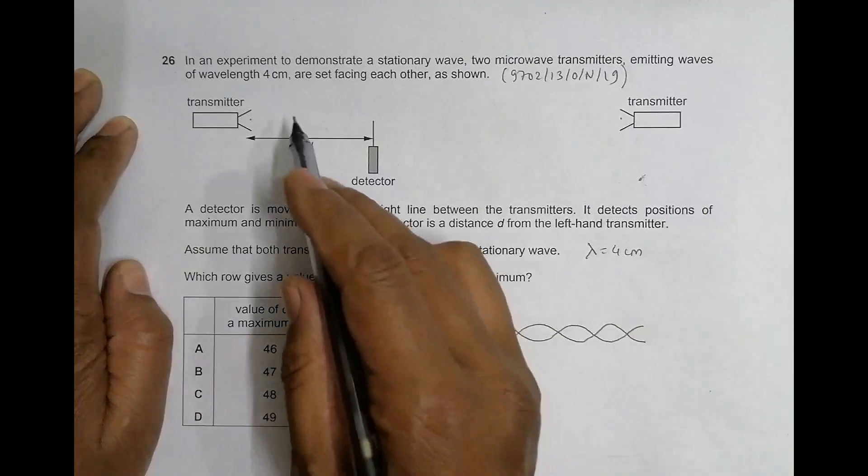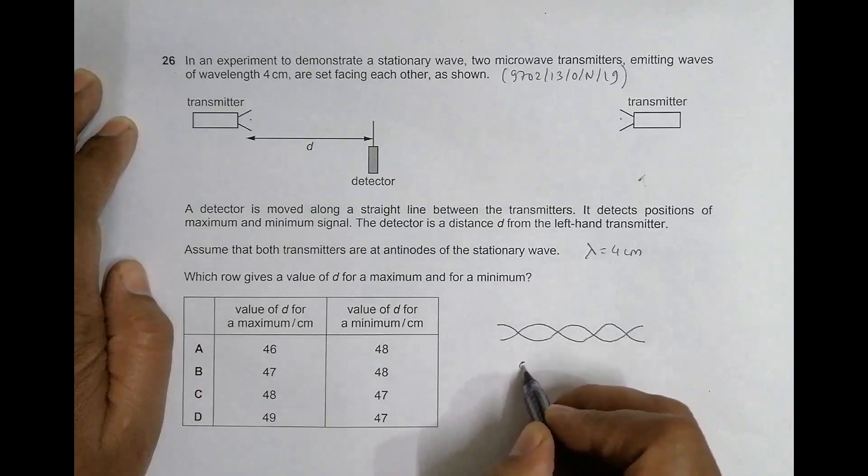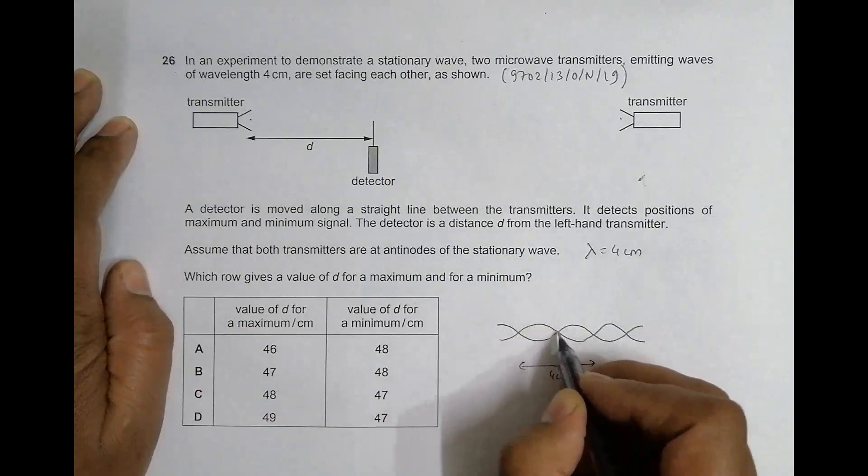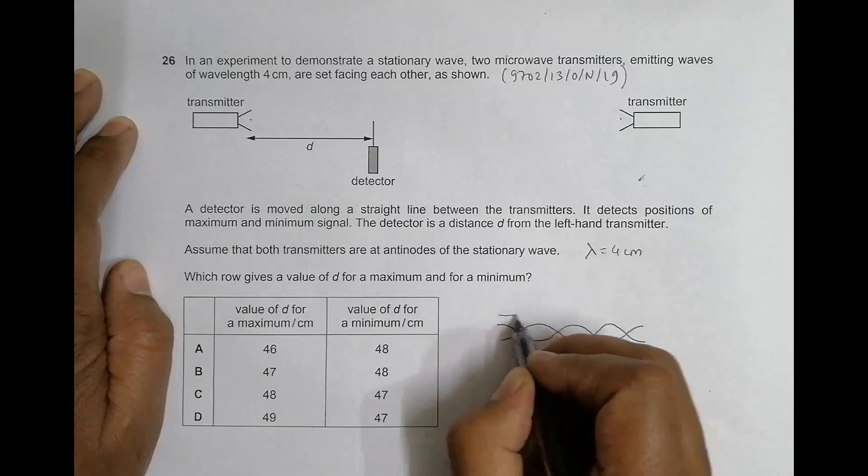Since lambda equals 4 centimeters, the distance from here to here is 4 centimeters. It is a single wave, 4 centimeters. So this is 2 centimeters, 2 centimeters, and this thing is 1 centimeter.